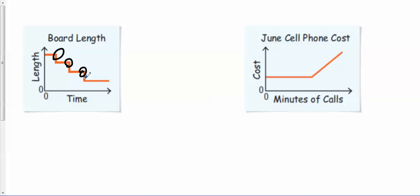Look at the second one, the June cell phone cost. What are your two variables here? You have the y-axis as cost and the x-axis as minutes of calls. If you see right here, the cost was constant for this period of time, and then what happened? It looks like it went up at this point. They probably went beyond their call limit and they had to pay extra per minute that they called.